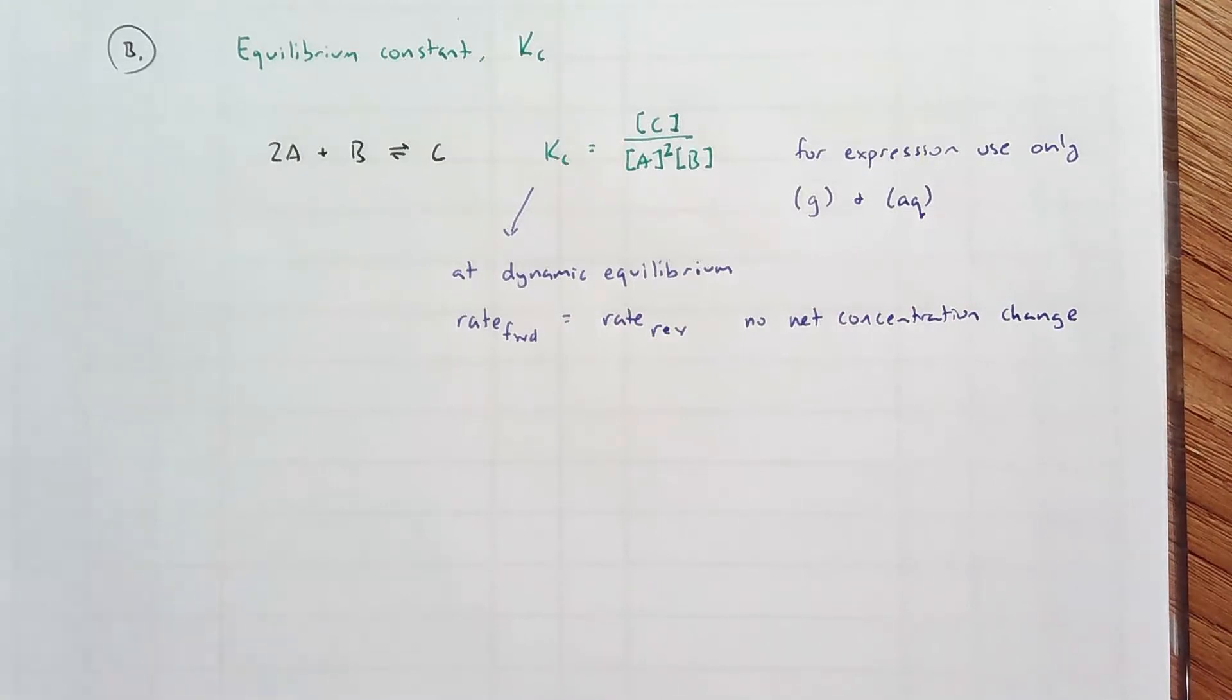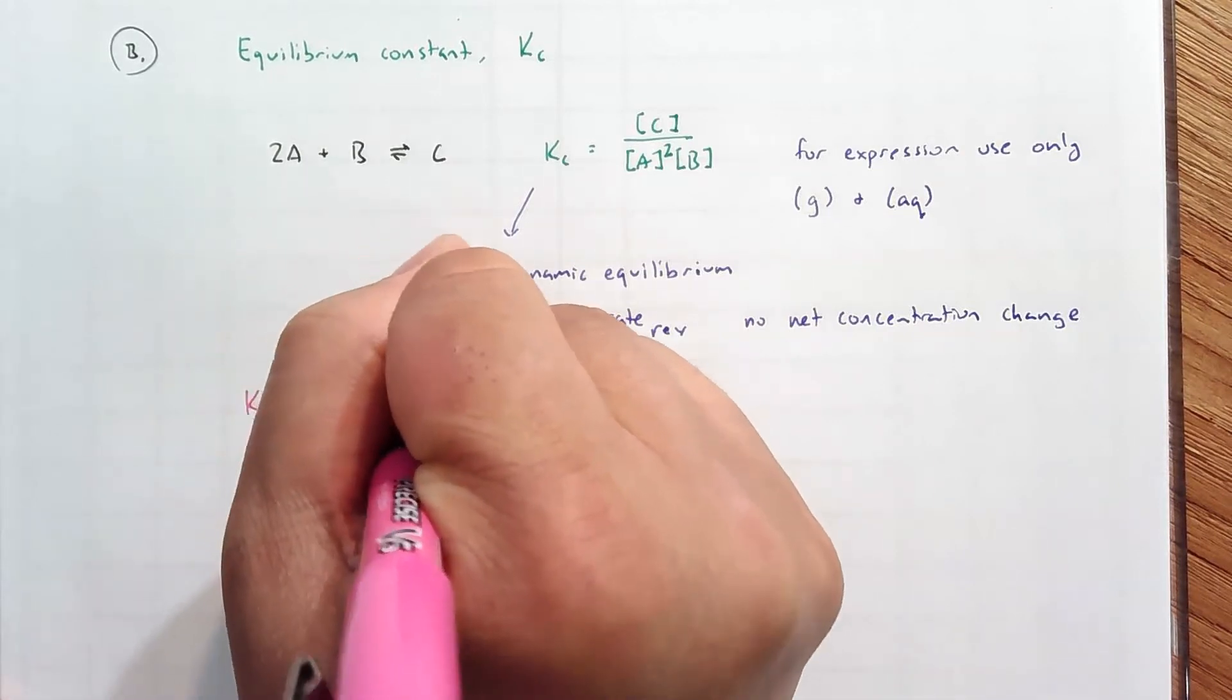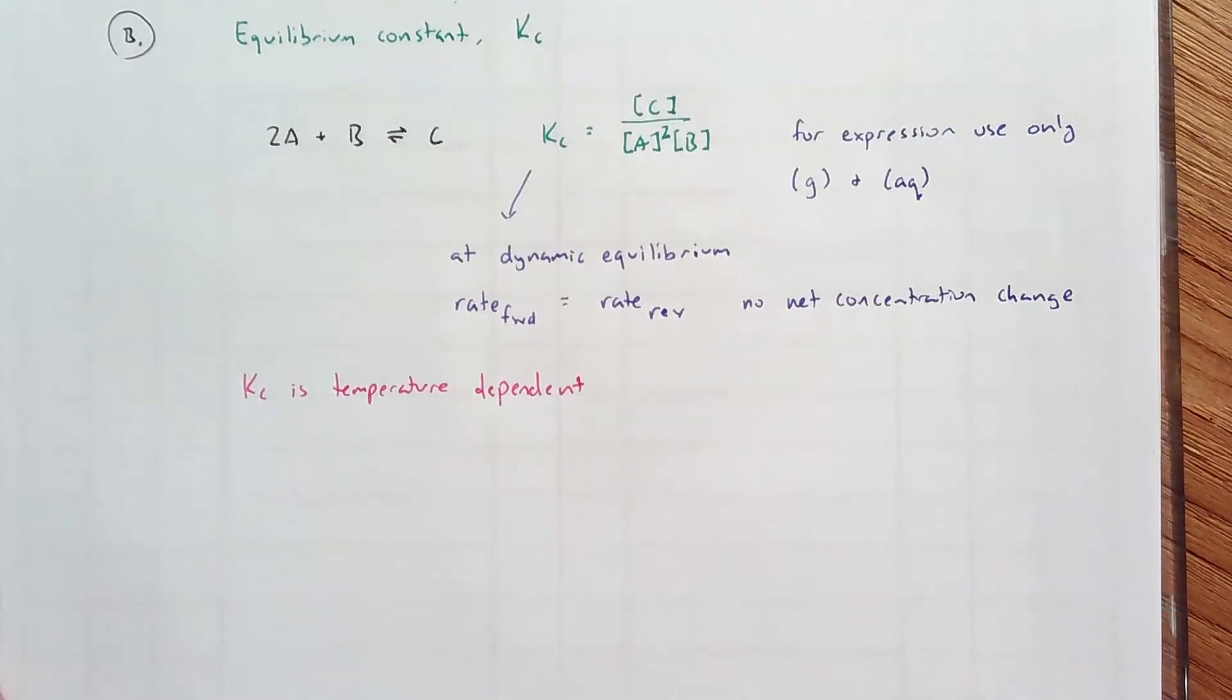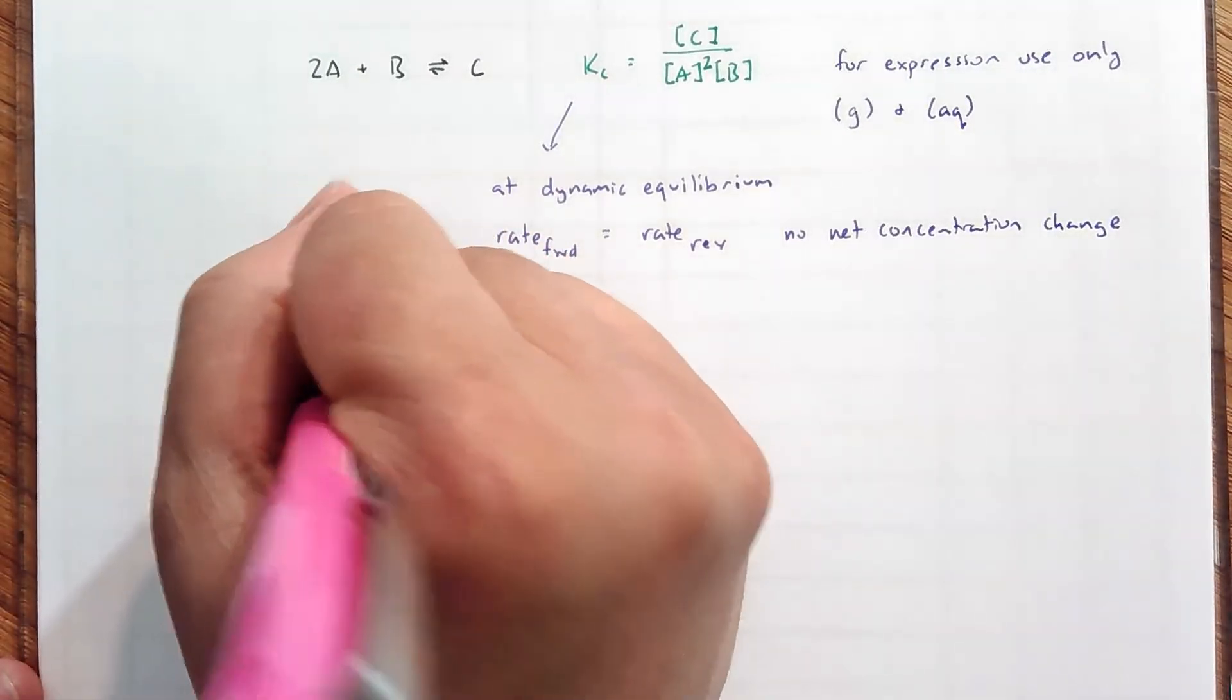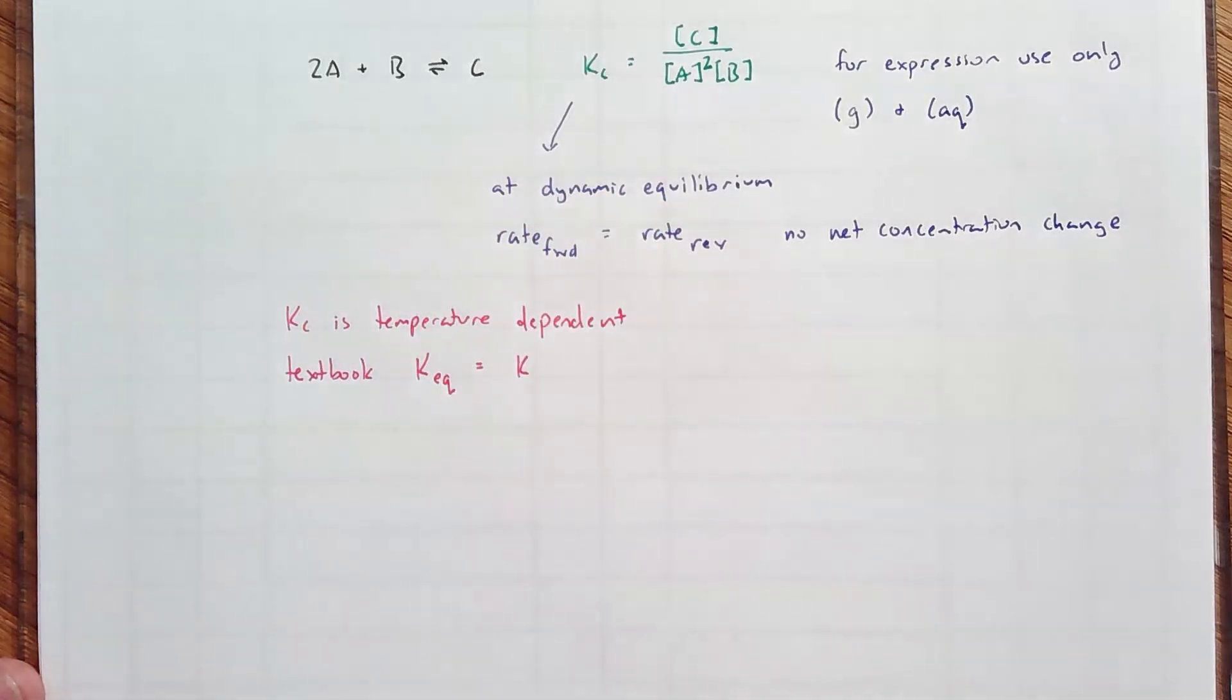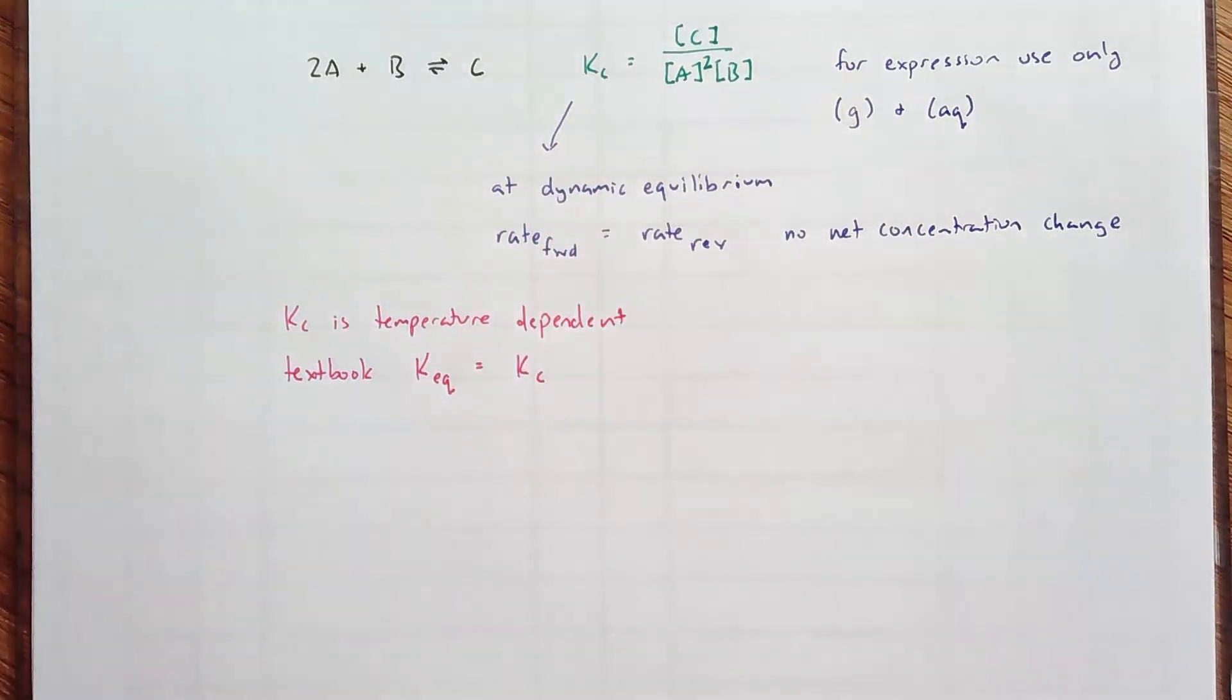Now, the other thing I want to mention about this is that Kc is temperature-dependent. Let's put a couple of notes here. Kc is temperature-dependent. The other thing I want to mention is that some textbooks use the term K-eq. If your textbook uses the term K-eq, that's just the same. We're going to assume that it's the equilibrium constant using concentrations, unless otherwise told differently.